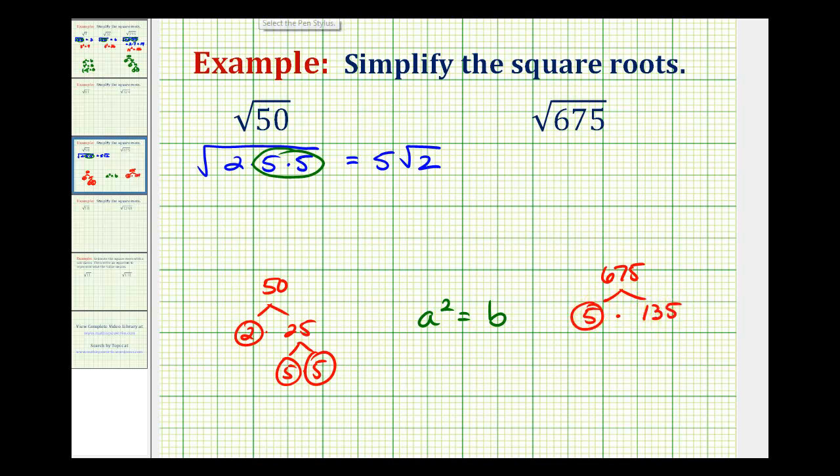5 is prime. 135 ends in 5, so it's divisible by 5. This would be 5 times 27. 5 is prime. 27 would be 3 times 9,